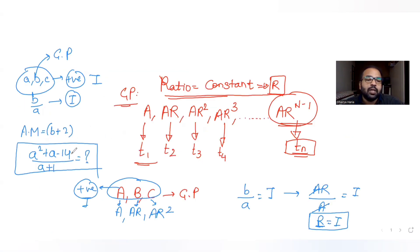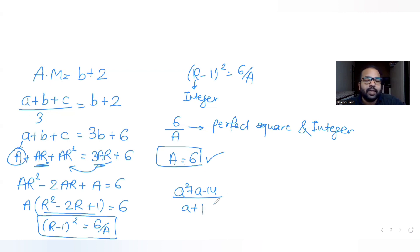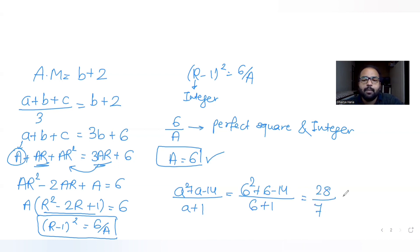Now substituting a = 6 into the expression (a² + a − 14) / (a + 1): we get (6² + 6 − 14) / (6 + 1) = (36 + 6 − 14) / 7 = 28 / 7 = 4. So the value of the expression is 4.